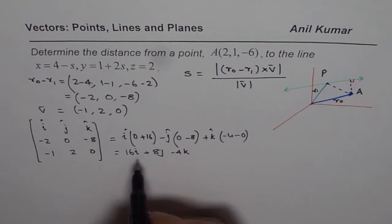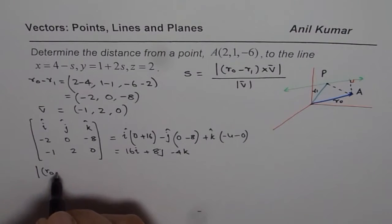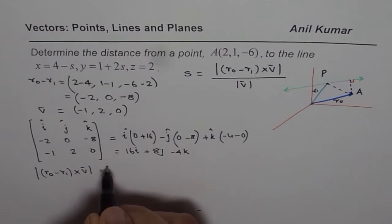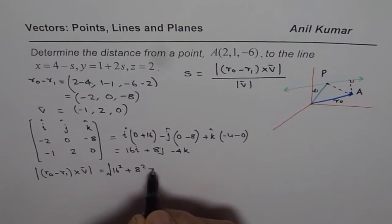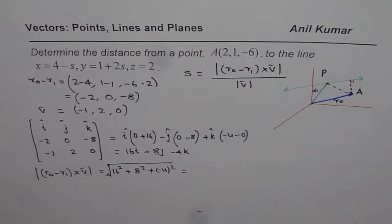Now, the magnitude of this will be what? So let us now calculate the magnitude of R0 minus R1 cross the direction. That is the magnitude of this, which will be square root of 16 square plus 8 square plus minus 4 square. Let us find this also. We will use the calculator.